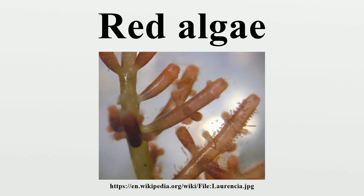Relationship to Chromalveolata. Chromalveolates seem to have evolved from bikont ancestors that acquired red algae as endosymbionts. According to this theory, over time these bikonts and their endosymbiont red algae evolved to become Chromalveolata and their chloroplasts. This part of endosymbiotic theory is supported by various structural and genetic similarities.